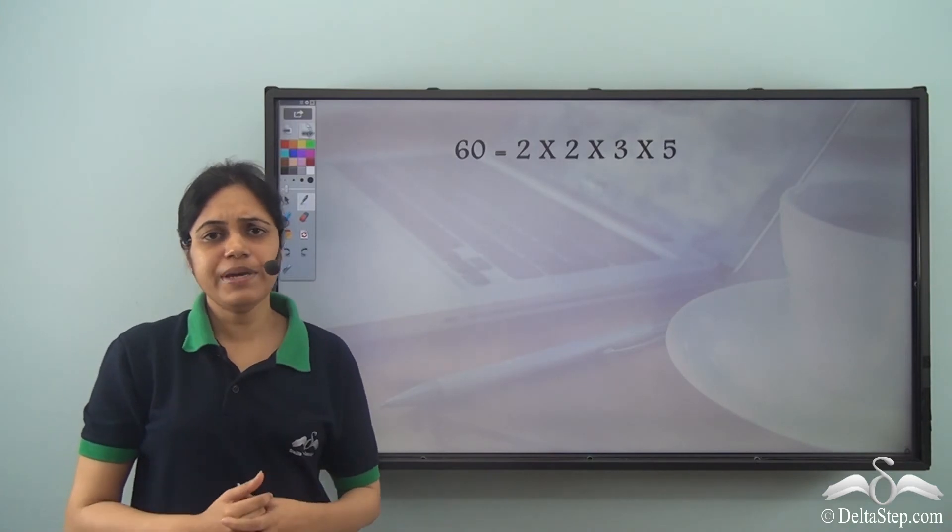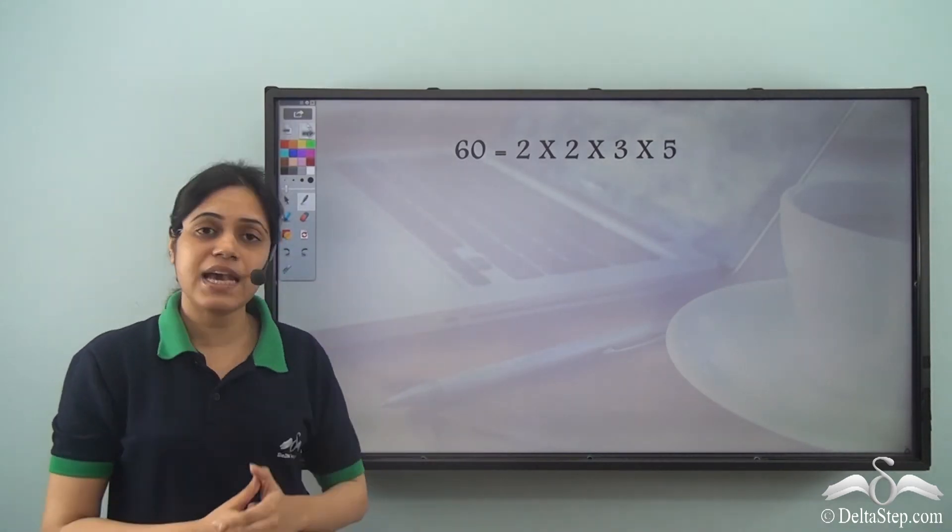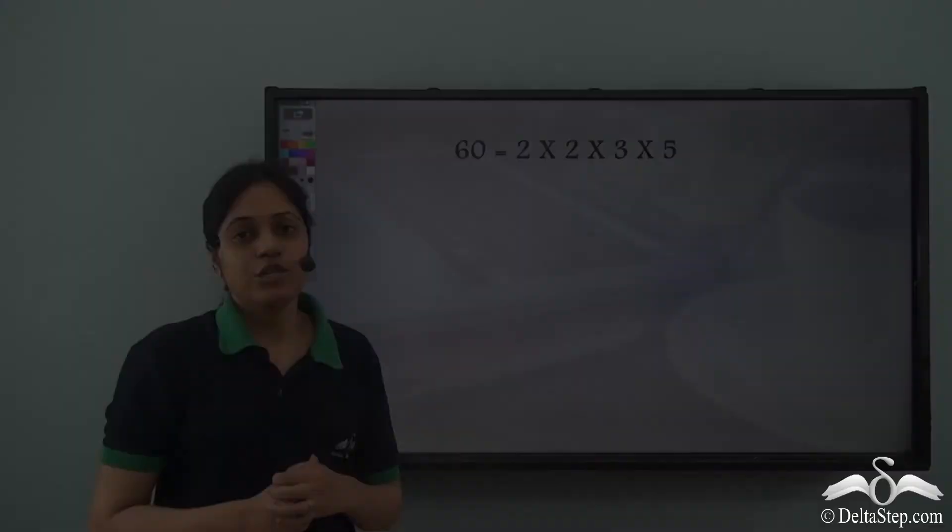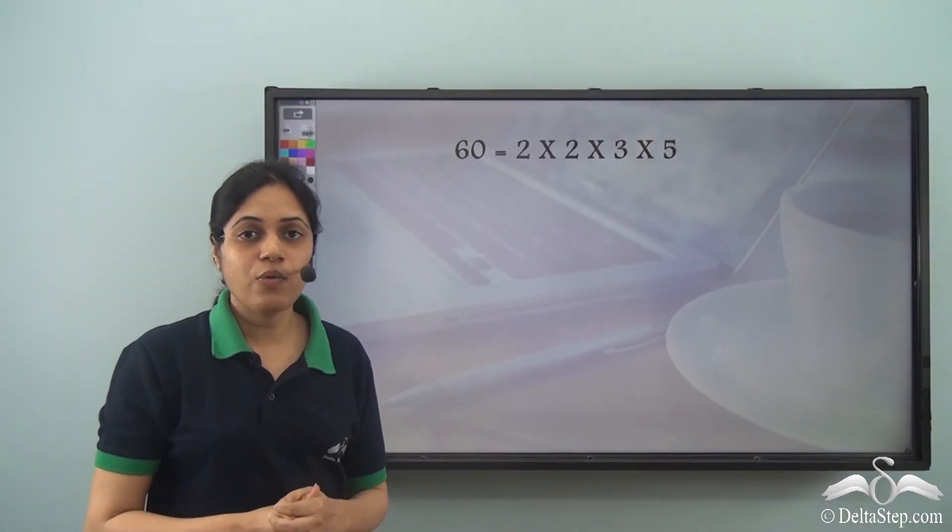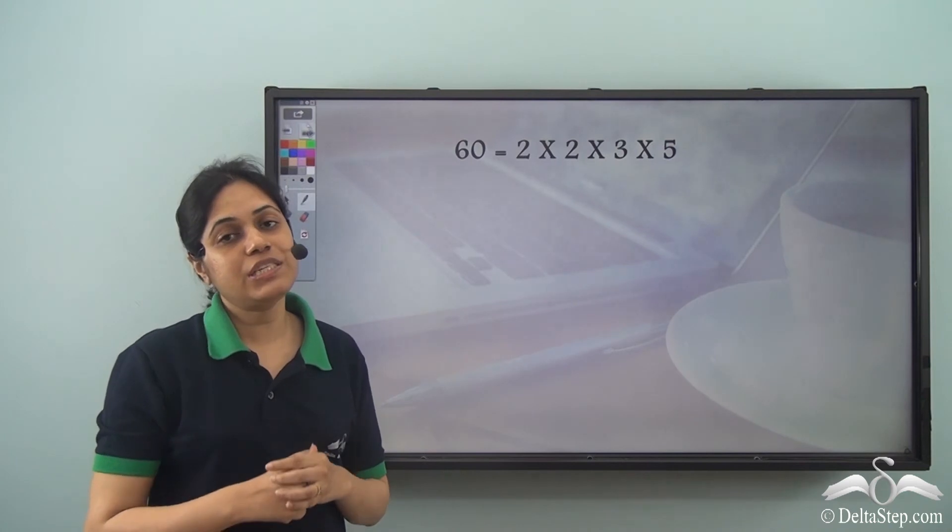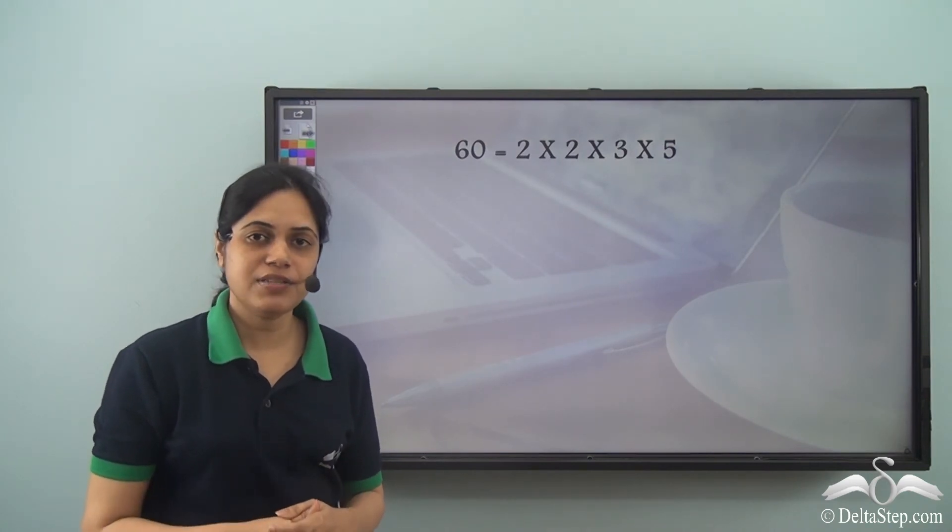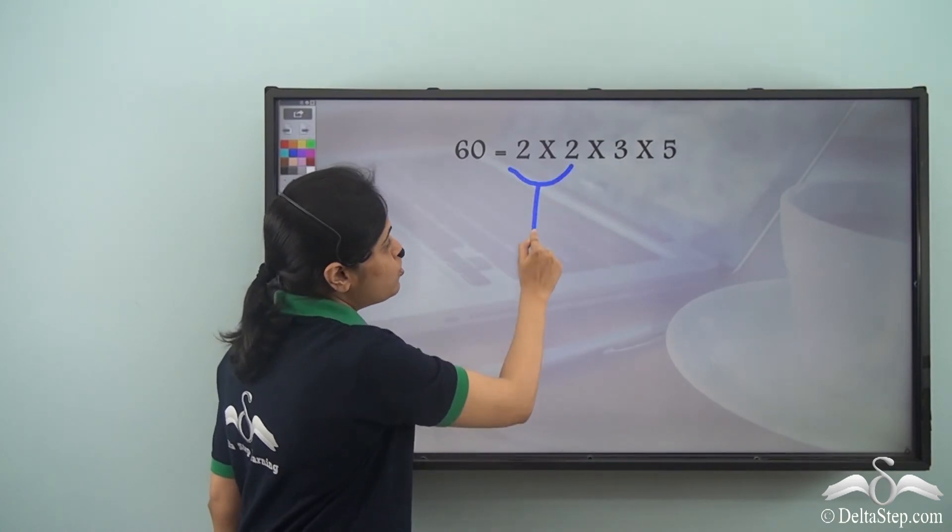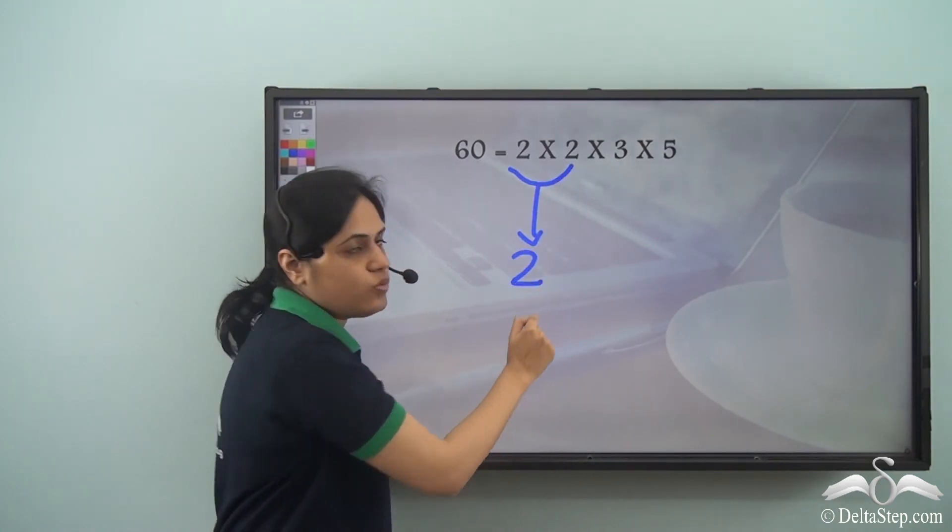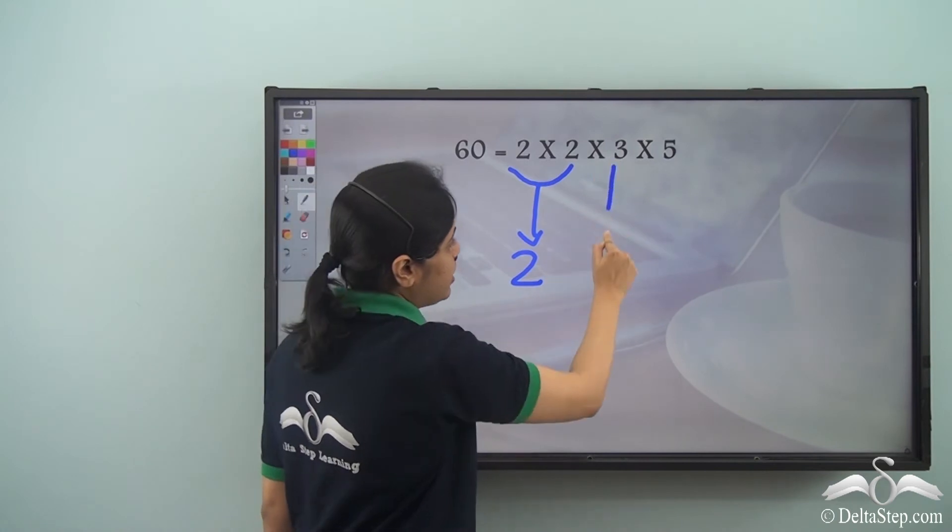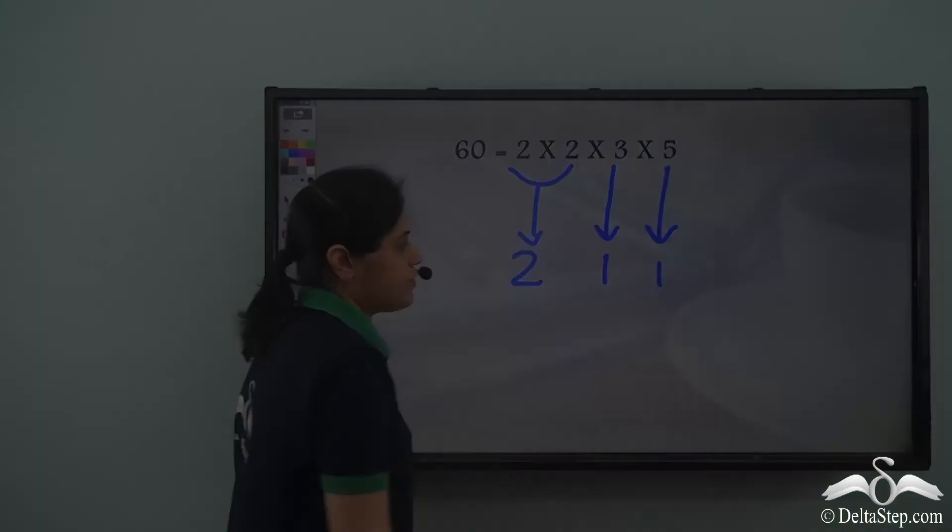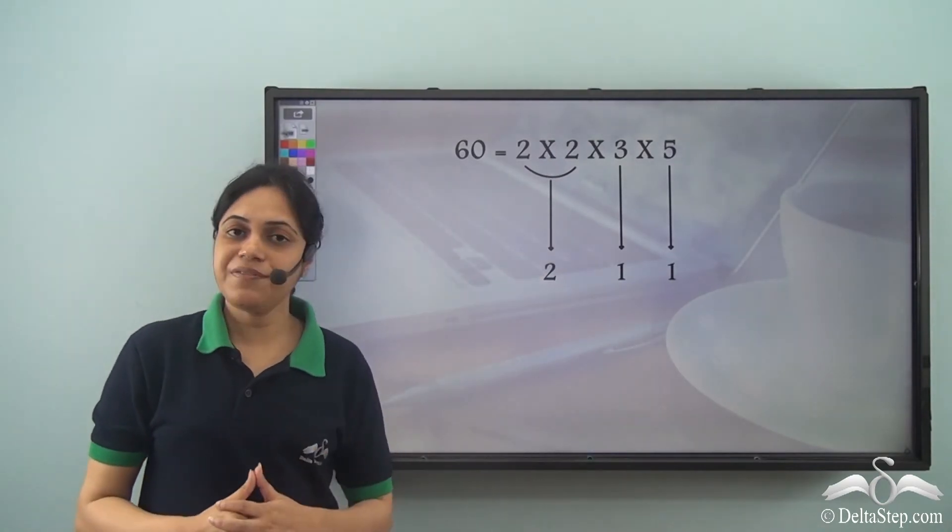So now can you tell me how many factors will 60 have? Let us see. So first let us count how many of each type of prime factors does 60 have. So there are two 2's, so I write a 2. There is one 3 and there is one 5. So 2, 1, and 1.